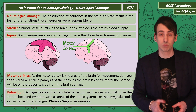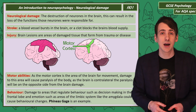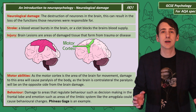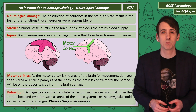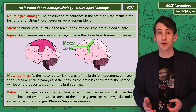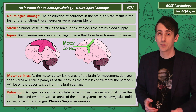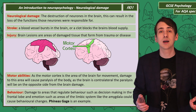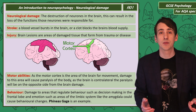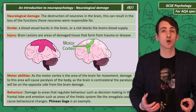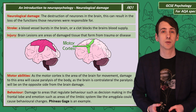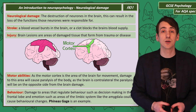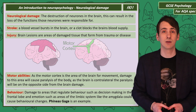Behaviours — the actions that we take — are regulated from a wide range of areas in the brain. Two examples are the frontal lobe, which controls decision making, and areas of the limbic system, which produce emotional responses. Damage to these areas can change behaviour.